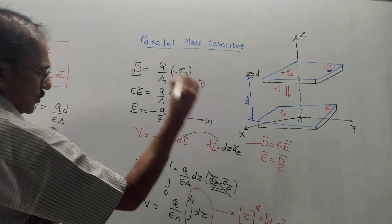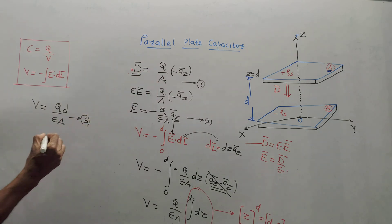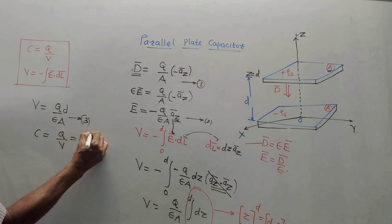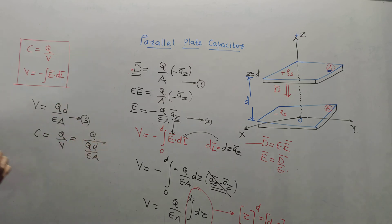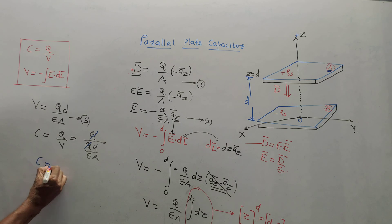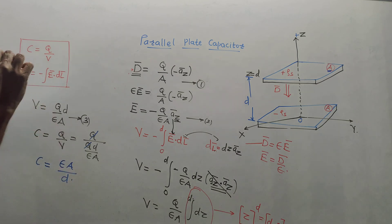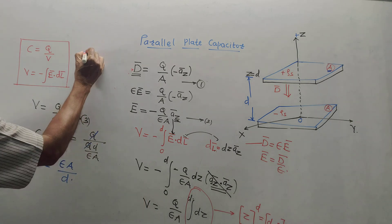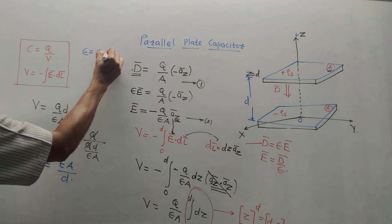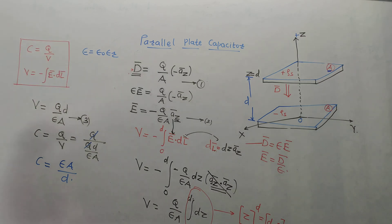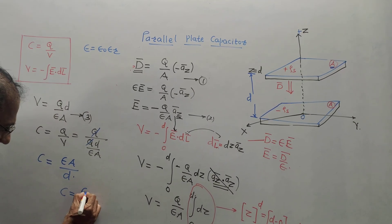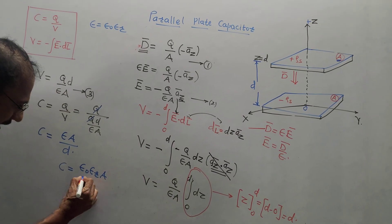Now make use of the basic formula C = Q/V. Substituting V = Qd/(εA), we get C = Q divided by Qd/(εA). The Q terms cancel, giving C = εA/d. Since ε = ε₀·εᵣ, where ε₀ is the permittivity of free space and εᵣ is the relative permittivity, the final equation is C = ε₀·εᵣ·A/d. This is the derivation of capacitance for a parallel plate capacitor.